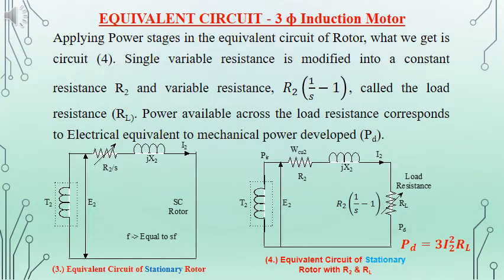Comparing diagrams 3 and 4: in the fourth diagram we are considering a constant resistance R2 and a variable resistance R2·(1/S − 1) as the load resistance RL. Combining R2 and R2·(1/S − 1) gives a single variable resistance R2/S, as given in the third diagram. In the fourth diagram, the power available across the load resistance RL is equivalent to the mechanical power developed. That is given by the equation PD = 3·I2²·RL, where RL equals R2·(1/S − 1).